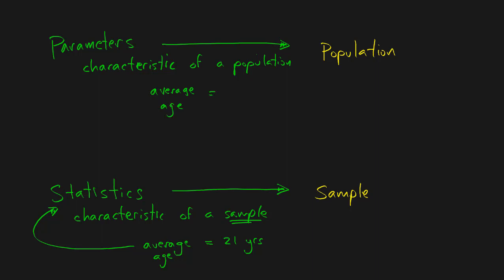It won't necessarily be the same number. Let's say that it ends up being 21.3 years. Now what is this value here? What is this average age? Well, because it describes the characteristic of the entire population, it's called a parameter.